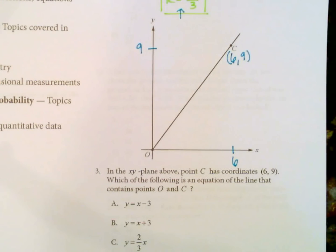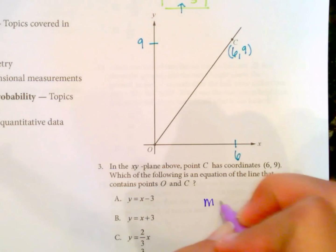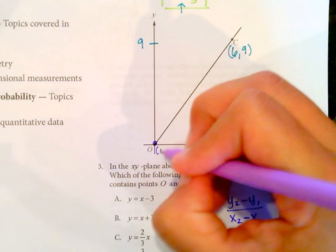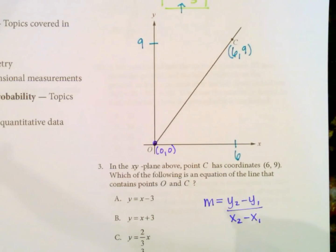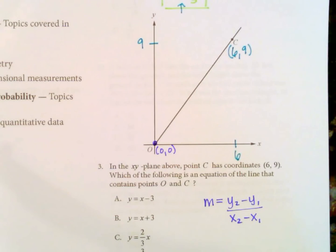Which of the following is an equation of the line that contains points O and C? So if we need to find an equation, we need the slope. So to find the slope of this line, as a reminder, m is slope and it's y2 minus y1 over x2 minus x1. So this point here is just 0, 0. So there's two ways I can do this. I can use the formula or I can look at the graph. Let's do both so that we can get familiar with it.